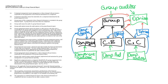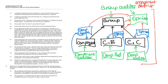The group auditor will have its own engagement partner, and that engagement partner is going to be responsible for this entire process — including the work done by the components. They have a really big responsibility: they need to make sure they're picking the right auditors and that when they evaluate the information they're doing it appropriately.